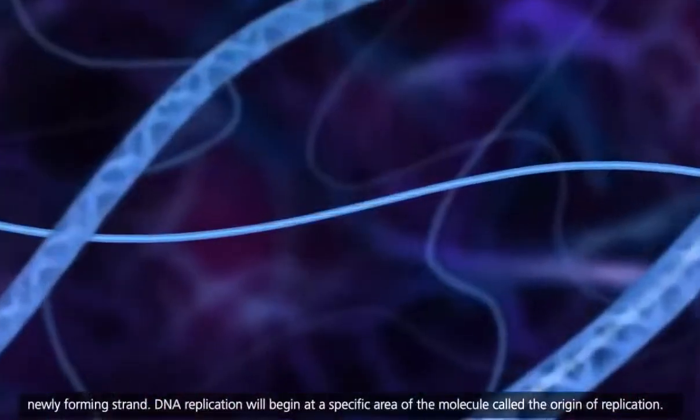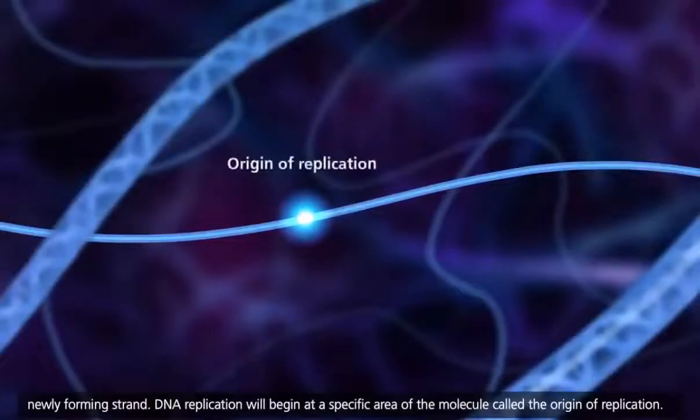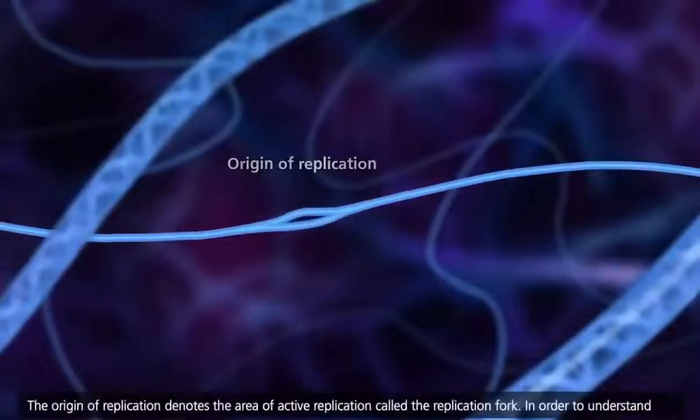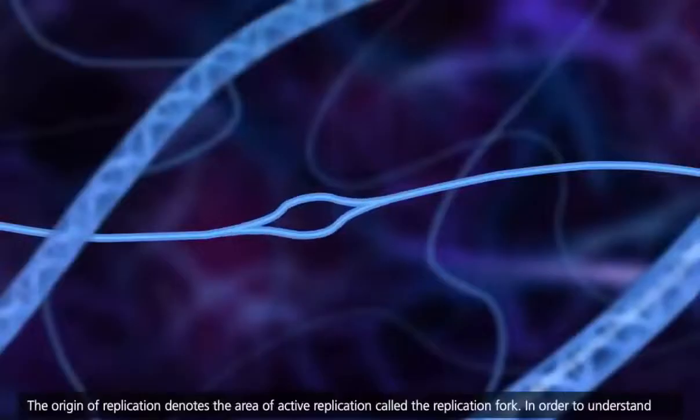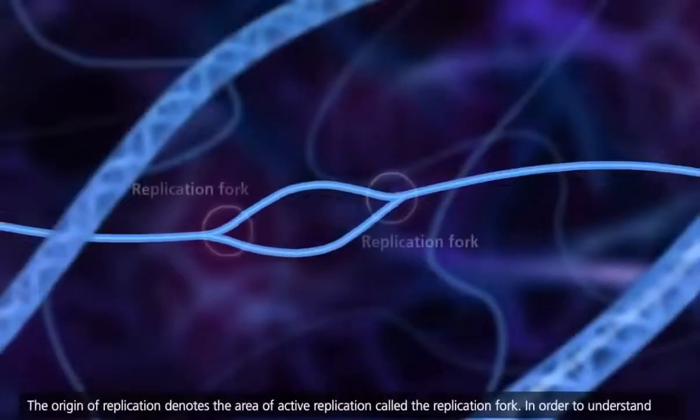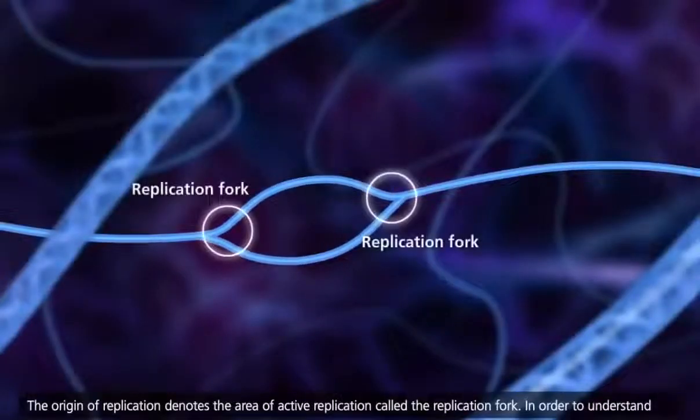DNA replication will begin at a specific area of the molecule called the origin of replication. The origin of replication denotes the area of active replication called the replication fork.